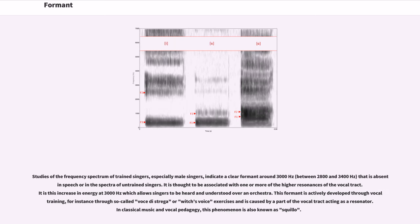Studies of the frequency spectrum of trained singers, especially male singers, indicate a clear formant around 3000 hertz, between 2800 and 3400 hertz, that is absent in speech or in the spectra of untrained singers. It is thought to be associated with one or more of the higher resonances of the vocal tract.